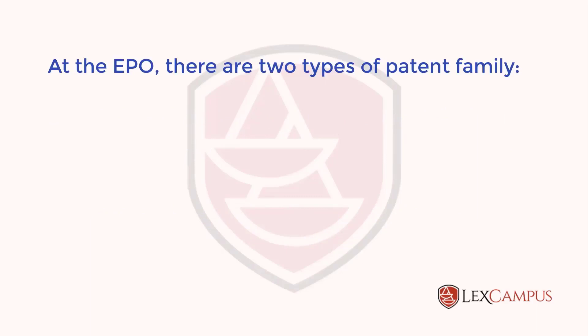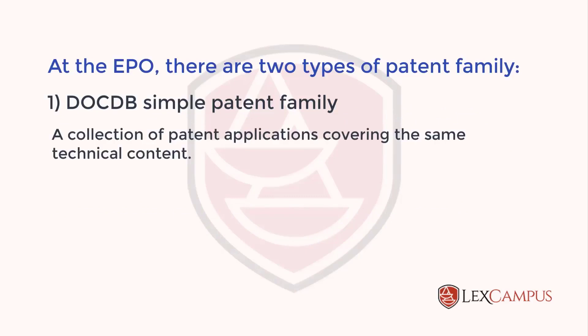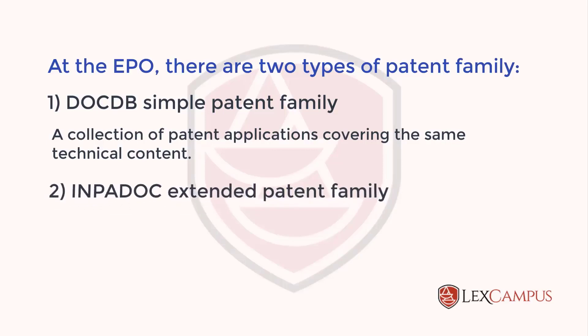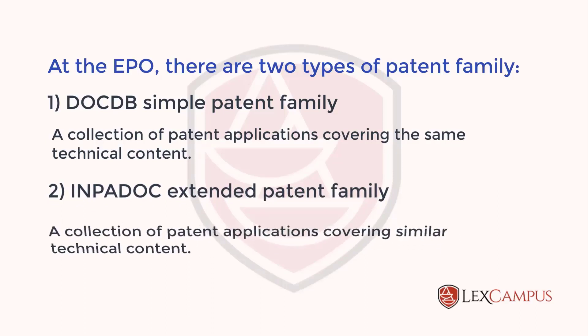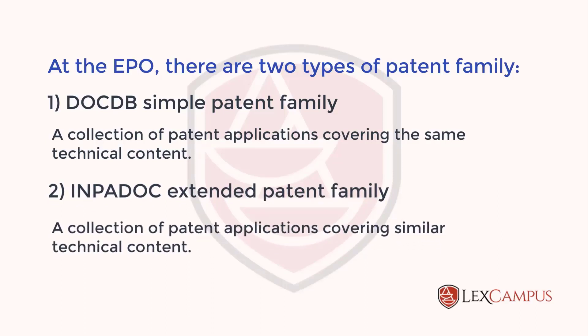At the EPO there are two types of patent families. One is the DOCDB simple patent family — a collection of patent applications covering the same technical content. The other is the INPADOC extended patent family, which deals with a collection of patent applications covering similar technical content — not the same, but similar.